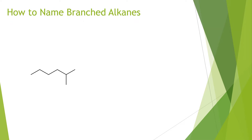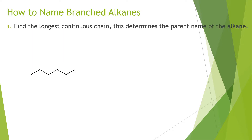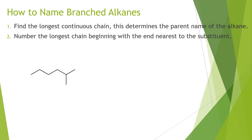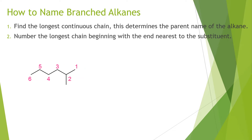The interesting part is how we name branched alkanes. There's a simple step-by-step process, and on each slide we'll introduce a new rule as we encounter new problems. The first step is to find the longest continuous chain — this determines the parent name of the alkane. Then you number the longest chain beginning with the end nearest to the substituent. In this example, the longest carbon chain is six carbons long.